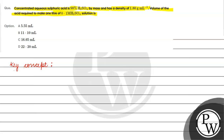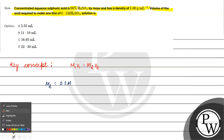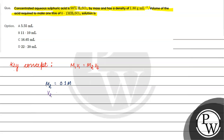The key concept for this question is we will basically use the formula M1V1 = M2V2. What have we been given? M2 is 0.1 molar, and V2 is 1 liter.